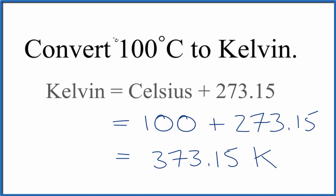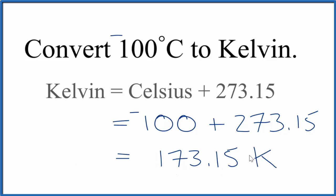But what if you had negative 100 degrees Celsius? To do that, we'd take negative 100 degrees plus 273.15, and we'd end up with 173.15 Kelvin.